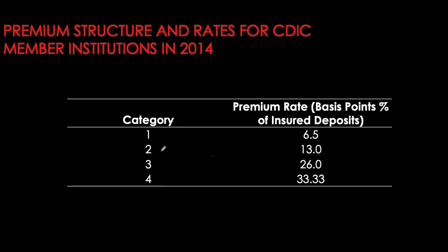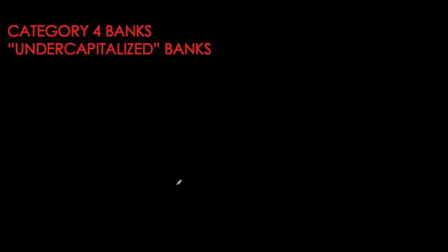This table shows the four main categories in which banks are classified depending upon their risk profile. Category one banks are classified as the best banks — the ones which are well capitalized — and they pay the lowest premium of about 6.5 cents per hundred dollars. Category four banks are classified as the worst banks, paying the highest premium of 33.3 cents per hundred dollars of deposits, as these are the banks which are severely undercapitalized.